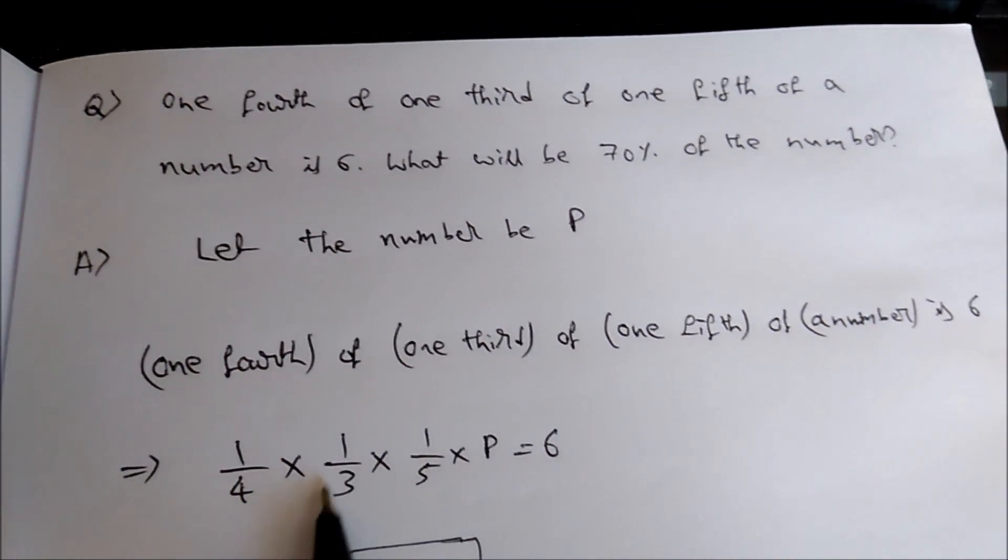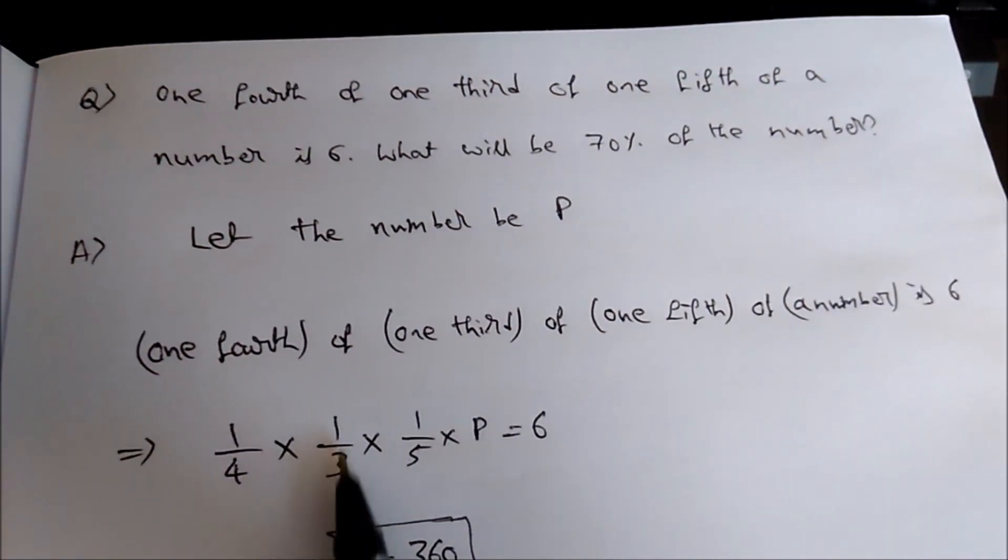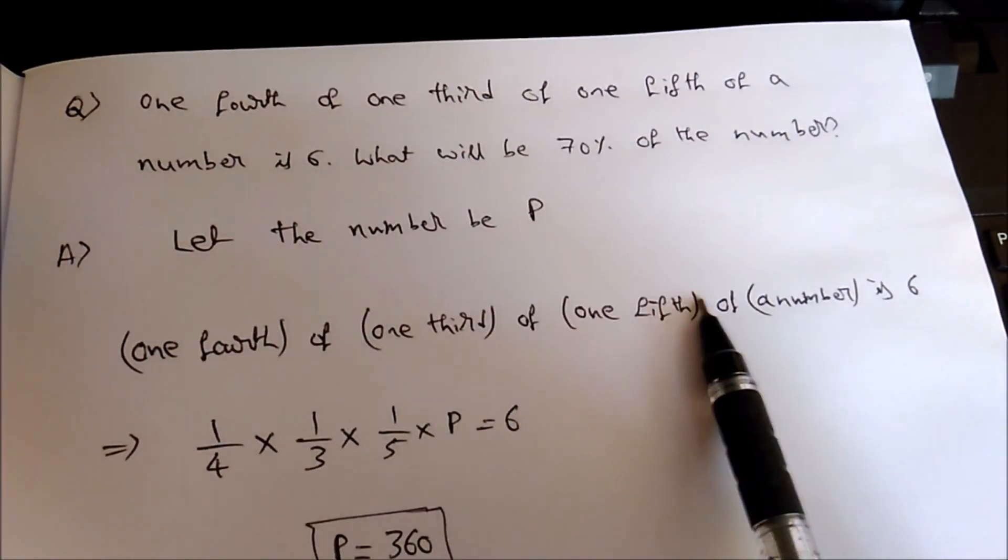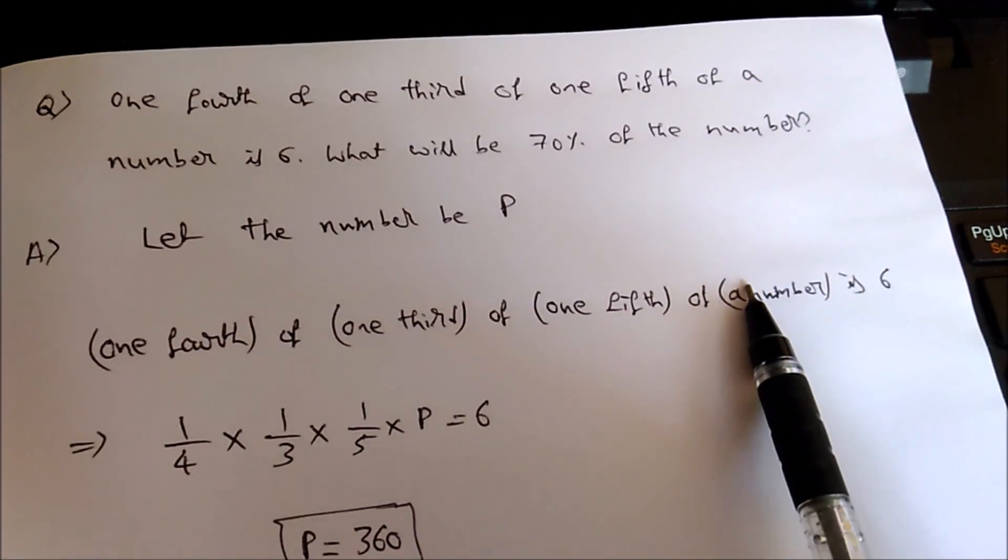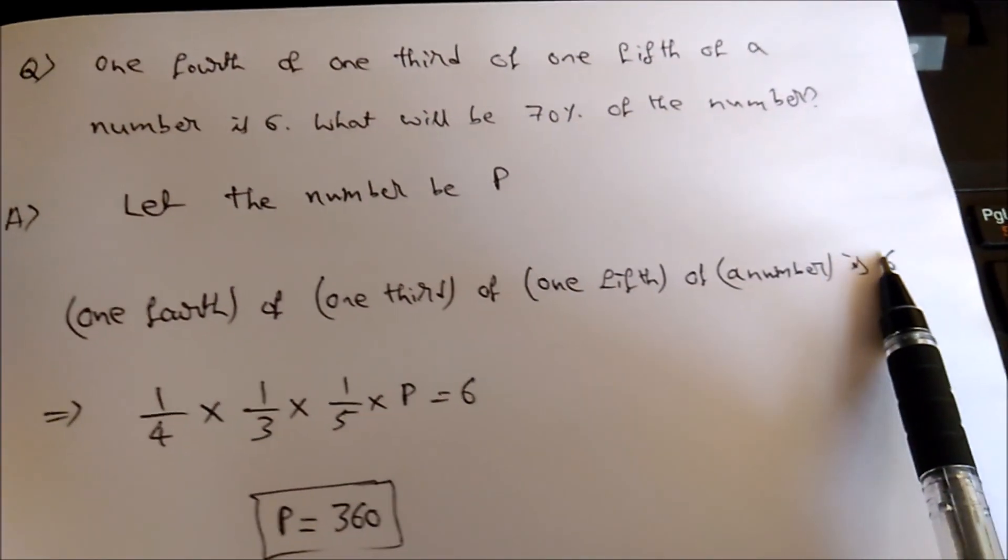One-third means 1 by 3; 'of' means multiplication. One-fifth means 1 by 5; 'of' means multiplication of the number. The number, as we assumed, is P. Its value is 6.